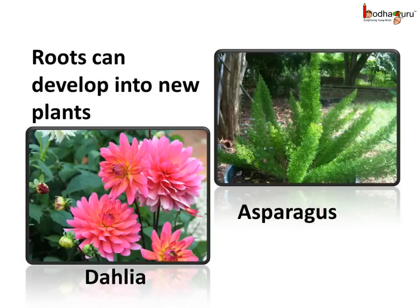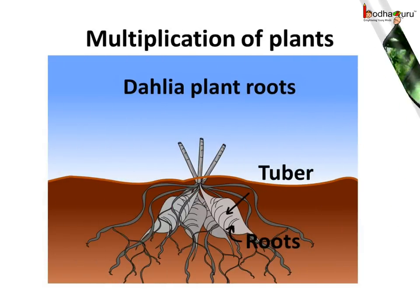In some plants, the roots help in reproduction, like the roots of dahlia and asparagus, which can develop into new plants. The dahlia plant stores the excess food in the secondary roots and these get swollen. These are called tuberous roots. Sometimes the plant shoot dies but the tubers remain in the ground, and then a new shoot may grow up from the tuber, helping in the multiplication of the plant.